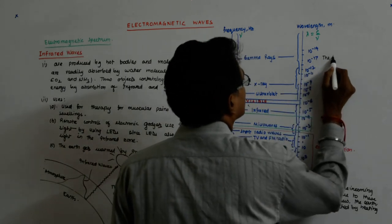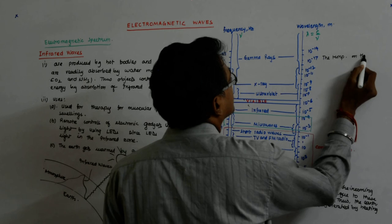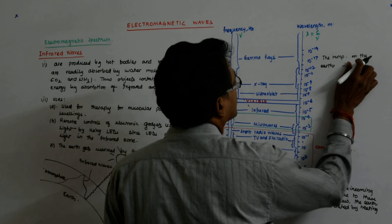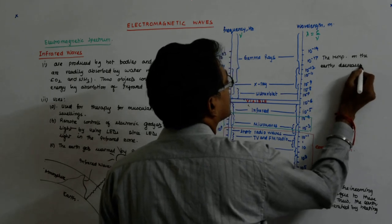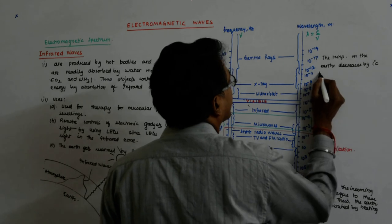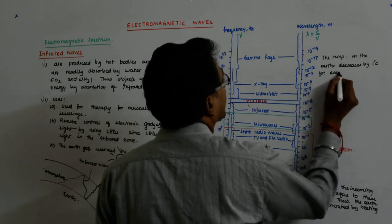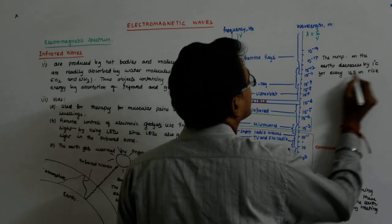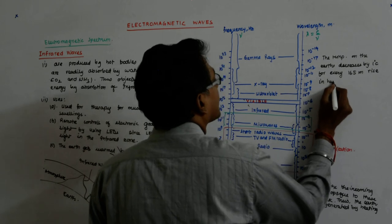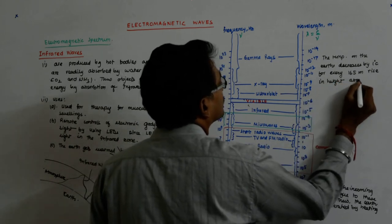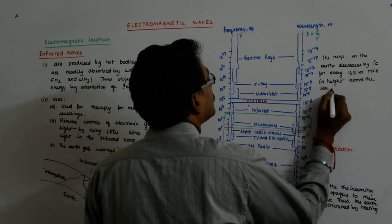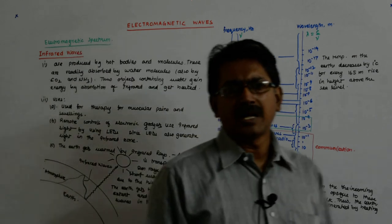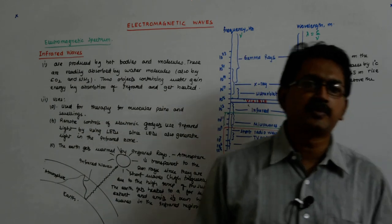The temperature on earth decreases by one degree centigrade for every 165 meter rise in height above sea level.